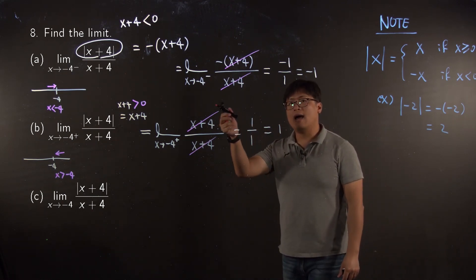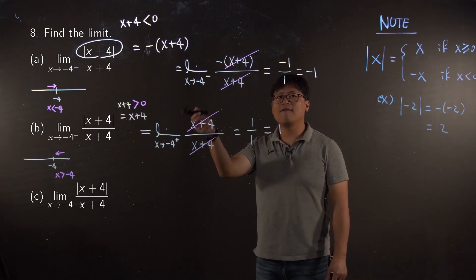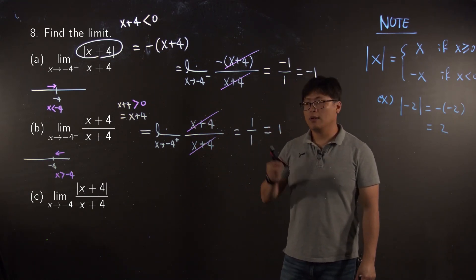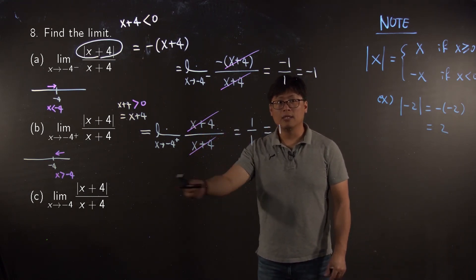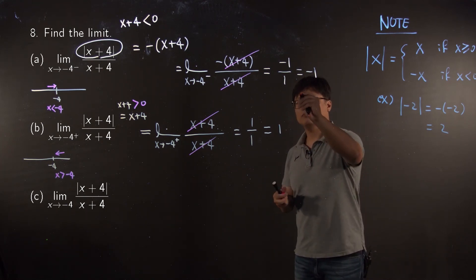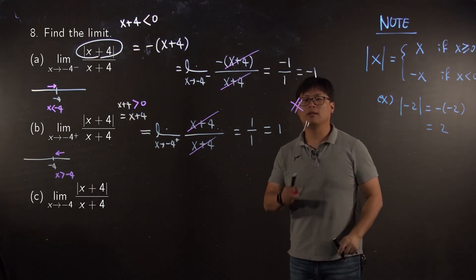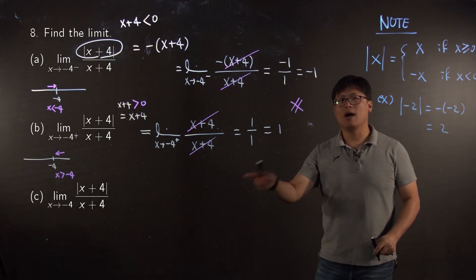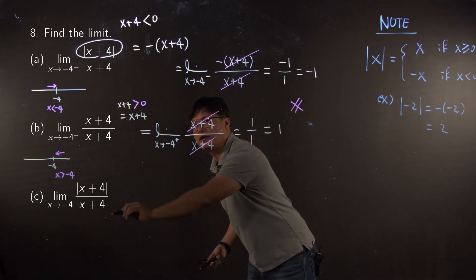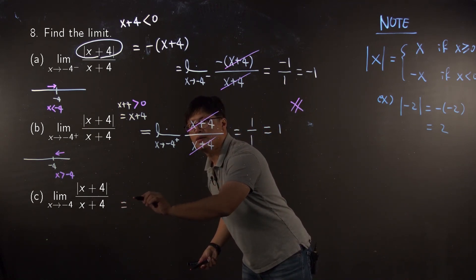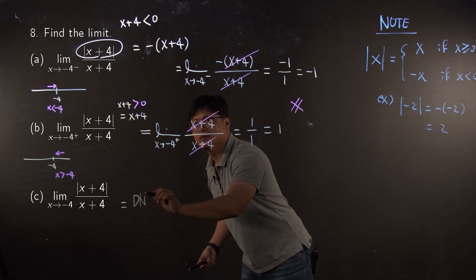Well, again, I found the left limit and I found the right hand limit. Then my limit is, since they are not equal to each other, my answer for c is automatically does not exist.